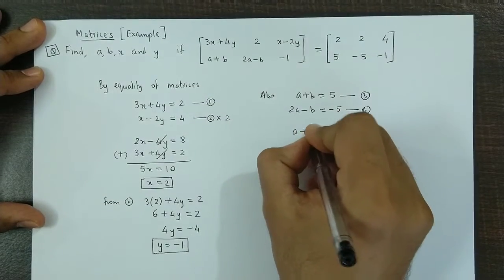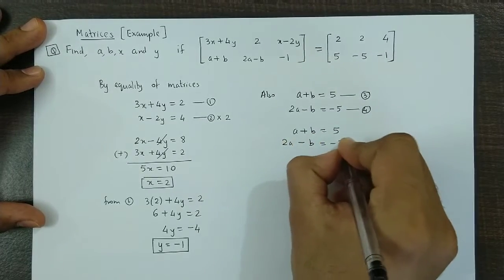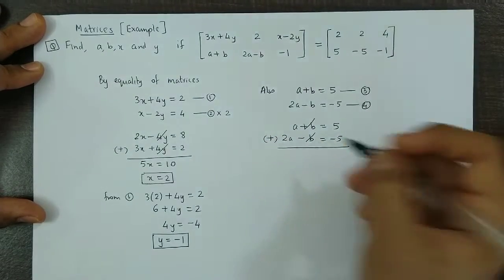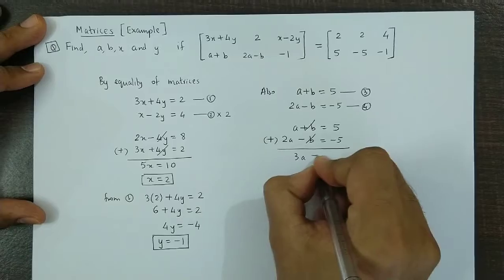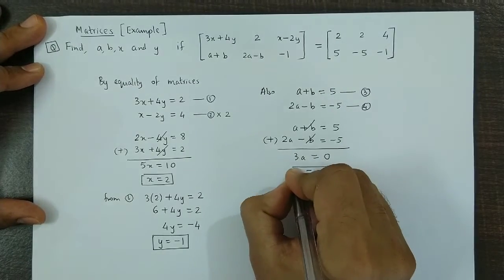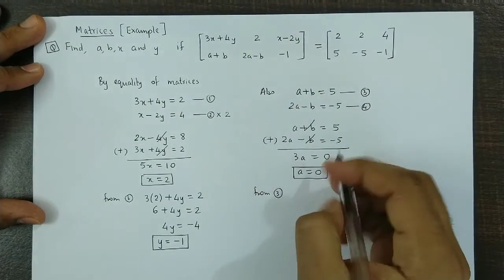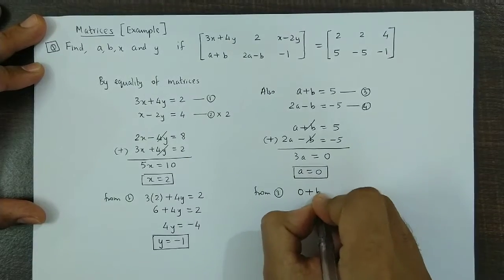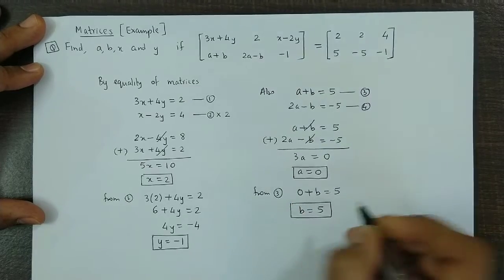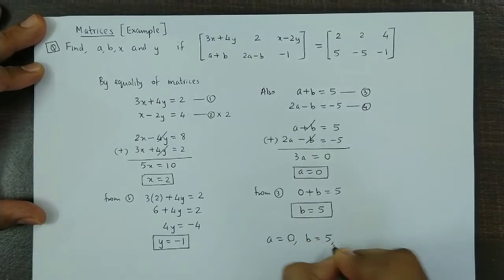Adding equations 3 and 4: B and minus B cancel, so we have 3A equals 0, giving A equals 0. Substituting back into equation 3: 0 plus B equals 5, so B equals 5. We have now obtained all four values: A equals 0, B equals 5.